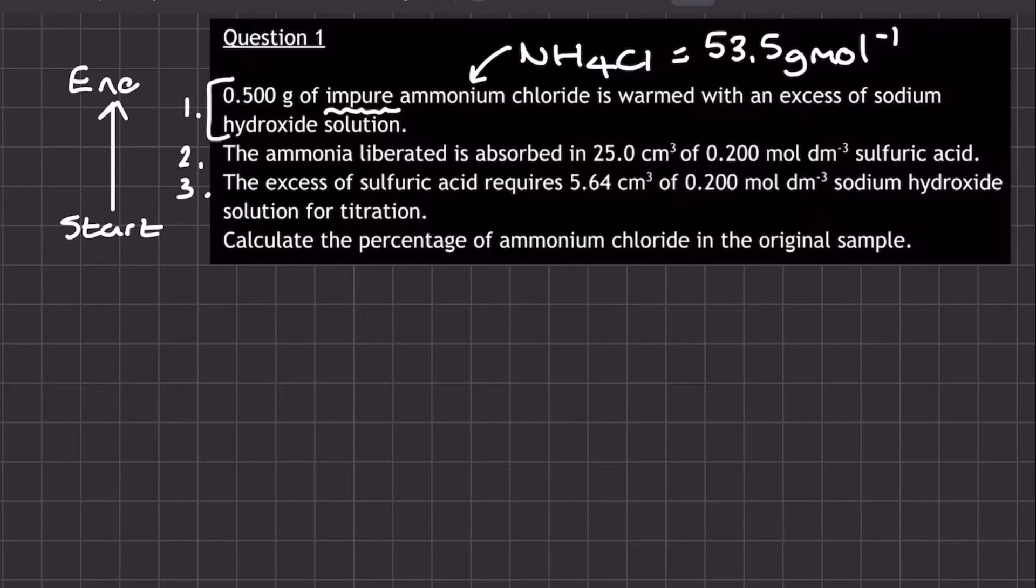so the amount that doesn't react, requires 5.64 centimeters cubed of 0.2 mol per decimeter cubed sodium hydroxide solution for titration. So what you've got to do effectively is work through the three stages in the reverse order to calculate the percentage of ammonium chloride in the original sample.